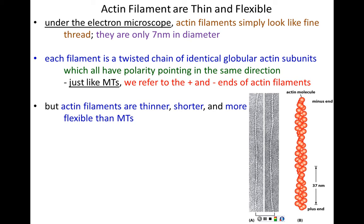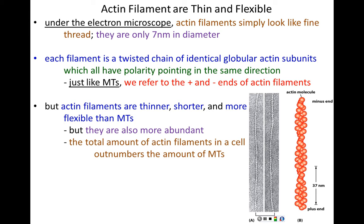Microtubules are like thick cables — they can bend a little but certainly can't fold in on themselves. Actin filaments are much more flexible than microtubules. Actin filaments are also much more abundant within a cell. In addition, separating them from microtubules, actin filaments tend to exist in bundled clusters, whereas microtubules are single cables that start at the centrosome and attach at some anchoring point.